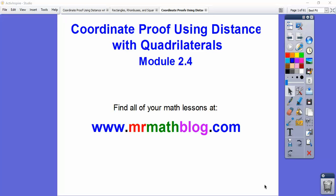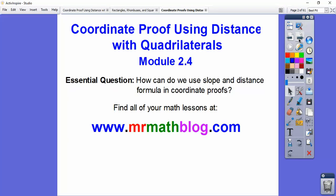Alright, this lesson is coordinate proof using distance with quadrilaterals. This is our fourth lesson in this module, an Integrated Math 3 lesson. I'm on a rental computer, so I'm hoping this works. Don't forget all your lessons can be found at MrMathBlog.com - make sure you click Integrated Math 3 at the top in that yellow toolbar. Our question is, how can we use slope and distance formula in coordinate proof?